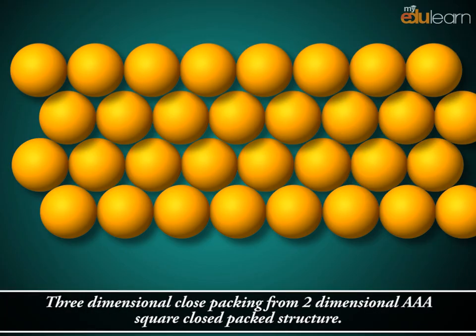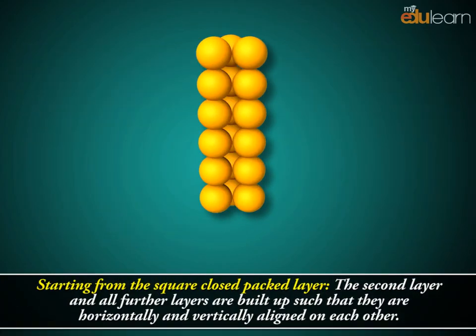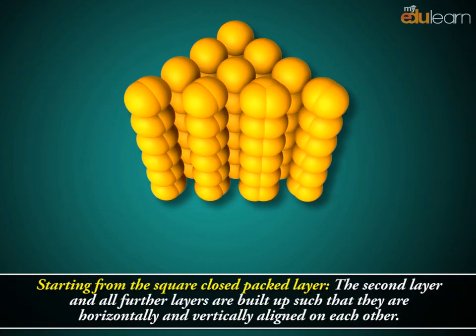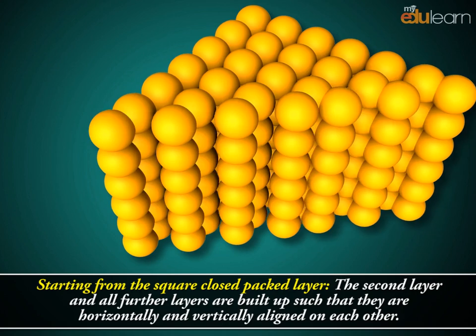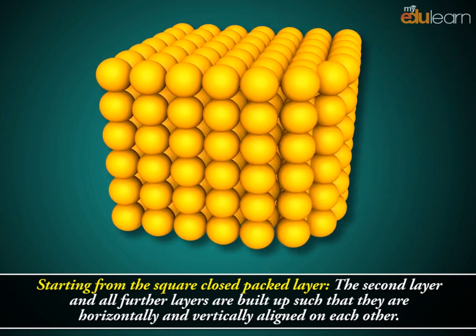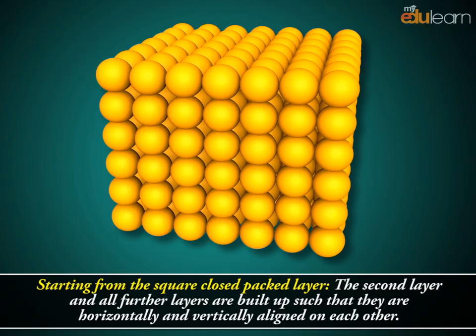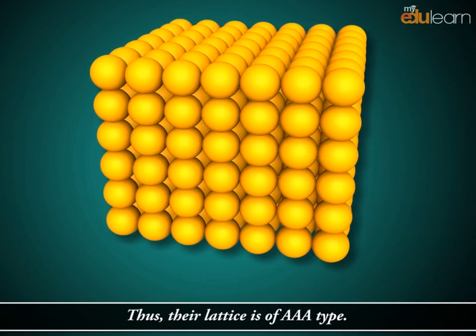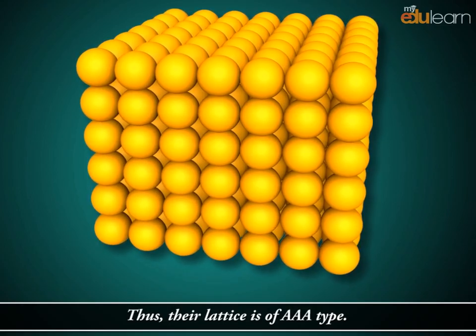3-dimensional close packing from 2-dimensional AAA square closed-packed structure. Starting from the square closed-packed layer, the second layer and all further layers are built up such that they are horizontally and vertically aligned on each other. Thus, their lattice is of AAA type.